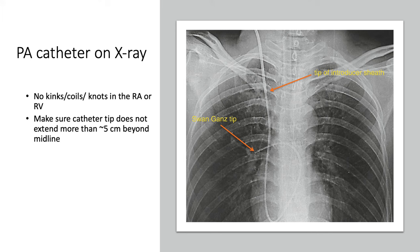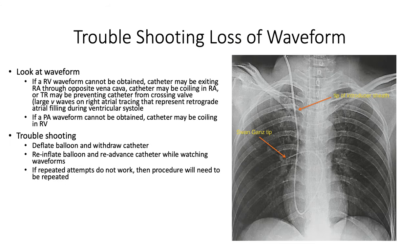Patients in the CCU who receive a Swan-Ganz catheter typically get chest x-rays on a frequent basis. You can look at these images to ensure the Swan appears to be where it should be, that there is no kinking, and the tip has not extended too far beyond the midline. In addition to x-ray imaging, the waveforms picked up on the Swan ports can give clues on its location. If you cannot get a PA waveform, it is possible that the Swan tip has moved or dropped into the right ventricle. In those situations, you can try deflating and reinflating the balloon and advancing the device. If waveforms are lost and cannot be regained, it may be necessary to position another Swan.